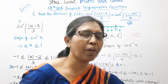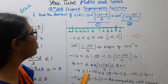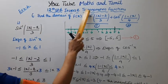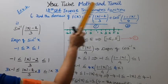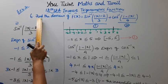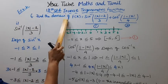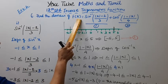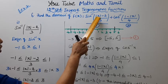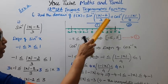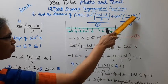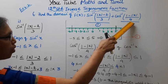Hello students, welcome to Max and Tamil channel. 12th standard max inverse trigonometric functions exercise 4.2, 6th question 1st subdivision. Find the domain of f of x equal to sin inverse of mod x minus 2 by 3 plus cos inverse of 1 minus mod x by 4.